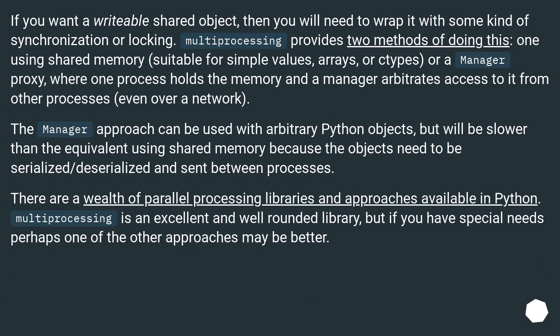If you want a writable shared object, then you will need to wrap it with some kind of synchronization or locking. Multiprocessing provides two methods of doing this: one using shared memory, suitable for simple values, arrays, or C types; or a manager proxy, where one process holds the memory and a manager arbitrates access to it from other processes, even over a network. The manager approach can be used with arbitrary Python objects, but will be slower because the objects need to be serialized and deserialized and sent between processes.